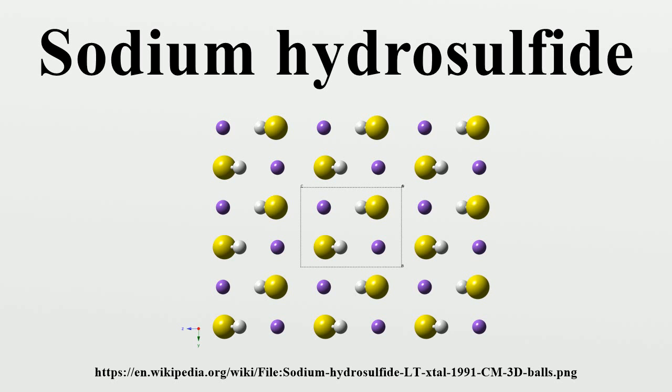NaHS has a relatively low melting point of 350 degrees Celsius. In addition to the anhydrous forms, it can be obtained as two different hydrates: NaHS·2H2O and NaHS·3H2O. These three species are all colorless and behave similarly, but not identically.